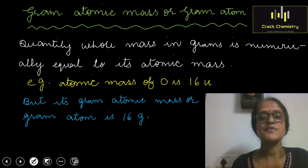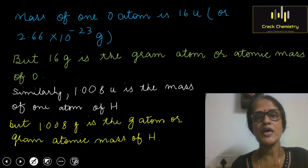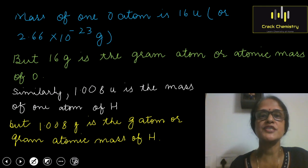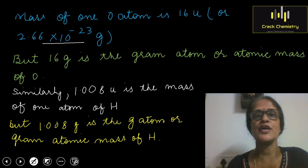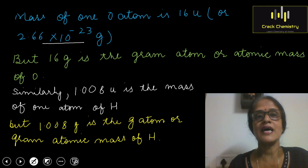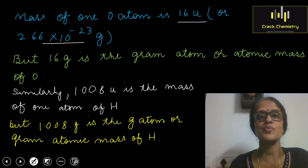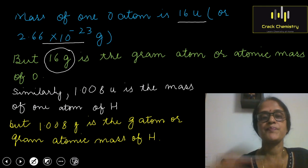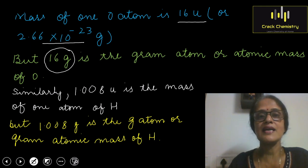We should not get confused between Gram Atom or Gram Atomic Mass and the mass of a single atom. For example, the mass of a single oxygen atom is 16 U, or in terms of grams it is 2.66 × 10⁻²³ grams, but its Gram Atomic Mass or Gram Atom is 16 grams. So the mass of one oxygen atom is 16 U, which in grams is 2.66 × 10⁻²³ g, while the Gram Atomic Mass of oxygen is 16 grams.